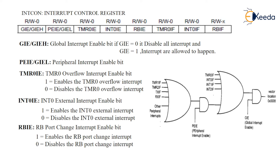INT0IE is the external interrupt enable bit. In the PIC, three pins are assigned — INT0, INT1, and INT2 — as external hardware interrupt pins. We can interface a switch on these pins. The pins must be enabled using INT0IE, INT1IE, and INT2IE before they can take effect. It is positive-edge triggered, meaning a low-to-high transition applied to the RB0 pin will trigger the interrupt.